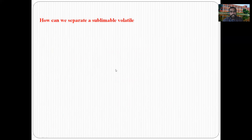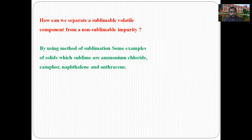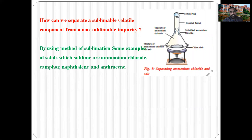How can we separate a sublimable volatile component from a non-sublimable impurity? By using the method of sublimation. Some examples of solids which sublime are ammonium chloride, camphor, naphthalene, and anthracene. Sublimation is a physical phase transition directly from solid state into vapor state. So in a mixture of ammonium chloride (sublimable) and sodium chloride (non-sublimable), the mixture can be easily separated by applying the sublimation technique.